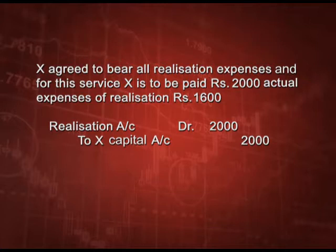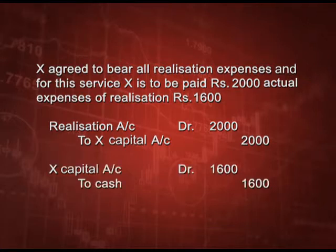Rupees 1600 are being paid by the firm on behalf of X — treat it like a drawing. So the entry will be X Capital Account debit to Cash 1600 rupees. The actual expenses can be more or less, but the firm is paying 2000, so the firm will show 2000 in the realization account.